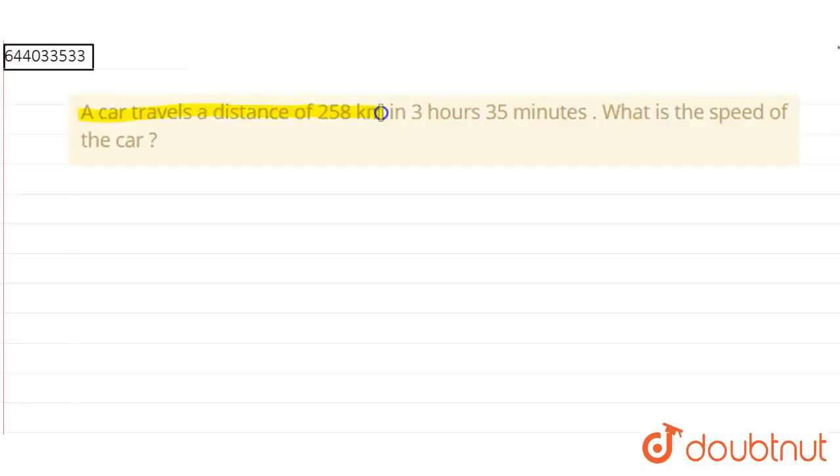A car travels a distance of 258 kilometers in 3 hours 35 minutes. What is the speed of the car?